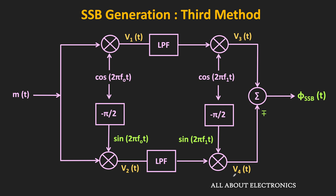In Weaver's method, there are four balance modulators, two low pass filters, and two minus π/2 phase shift blocks. In this case, these two minus π/2 phase shift blocks are used to provide a minus 90 degree phase shift to a single frequency, and hence the complexity of this phase shift circuit will reduce substantially. In this scheme, first the modulation is carried out at the low frequency, and then this modulated signal is passed through the low pass filter, and once again the modulation is carried out at the high frequency.